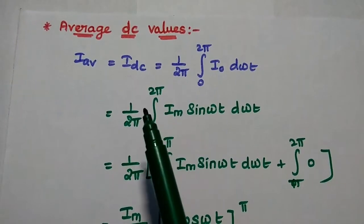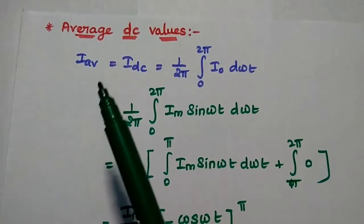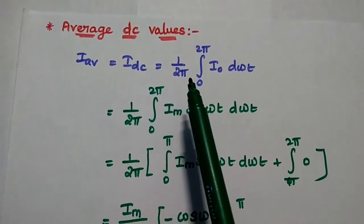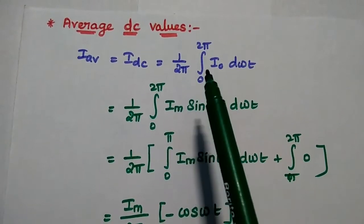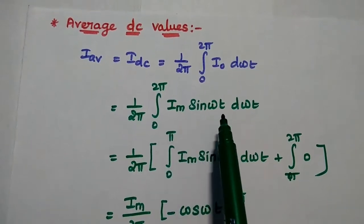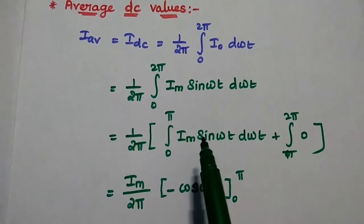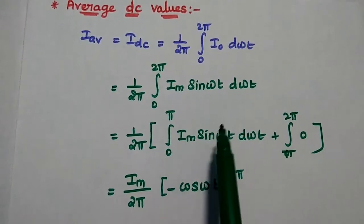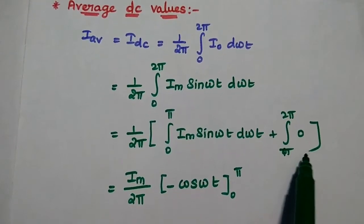First, we are going to find the average values of voltage and current. The average is the DC value. The average current (DC current) equals 1/(2π) times the integral of the output current with respect to ωt, ranging from 0 to 2π. Substituting the output current value Im sin(ωt), we expand the range: from 0 to π its value is Im sin(ωt), and from π to 2π its value is 0, since 0 to π is the positive half-cycle and π to 2π (negative half-cycle) is simply 0.